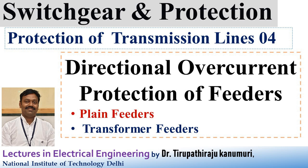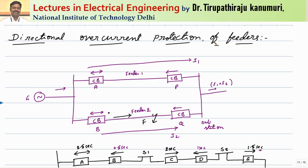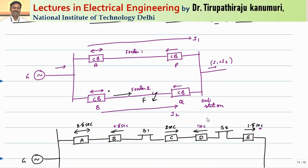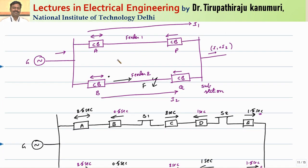Hi y'all, today we are going to discuss about directional overcurrent protection of feeders. In the last class, we have seen the different types of protection - time graded protection - for the case of parallel feeders as well as for ring mains. There will be non-directional relays used as well as directional overcurrent relays. Generally, these directional overcurrent relays are designed in such a way that they will operate only for a particular direction of a fault.